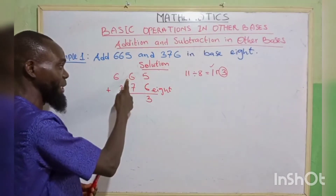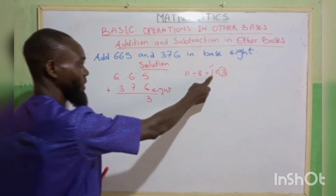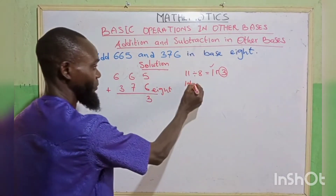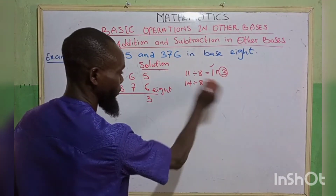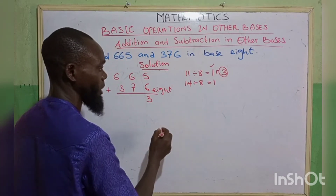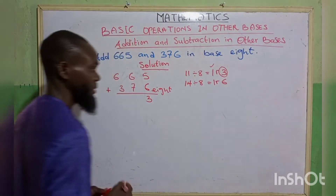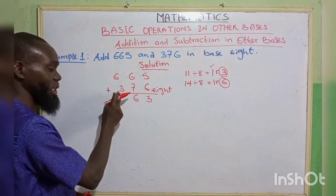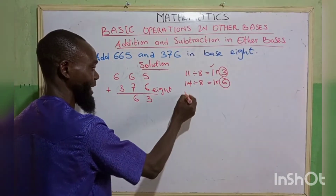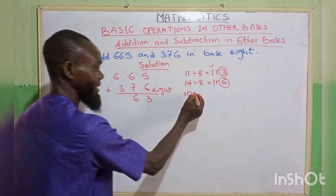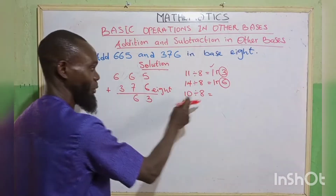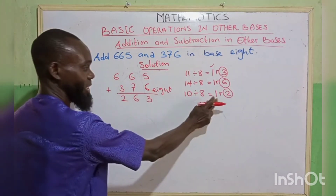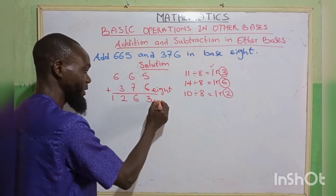Moving on: 6 plus 7 gives 13, plus the 1 carried gives 14. 14 is greater than 8. 14 divided by 8 gives 1, remainder 6. We write remainder 6 and carry 1. Then 6 plus 3 gives 9, plus the 1 carried gives 10. 10 is greater than 8. 10 divided by 8 gives 1, remainder 2. We write remainder 2, and since there are no more numbers, we place the carried 1 in front. So the answer is 1263 base 8.